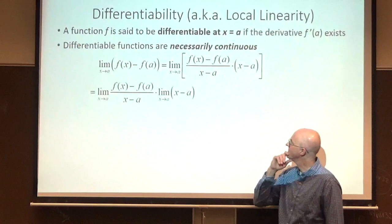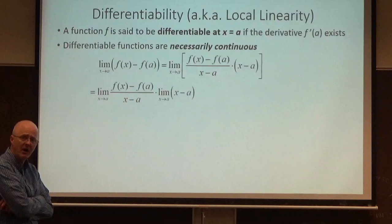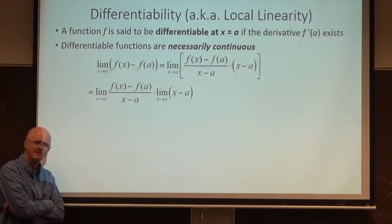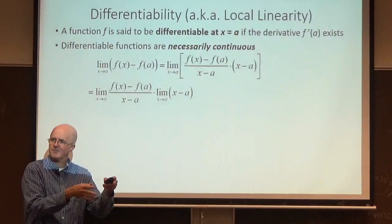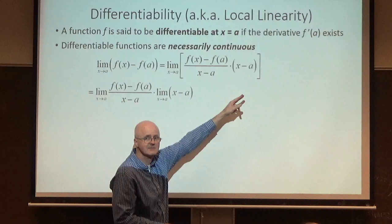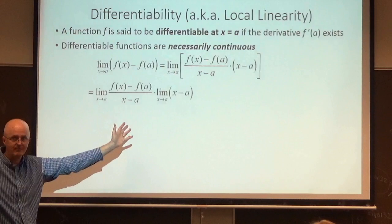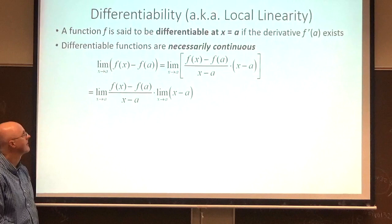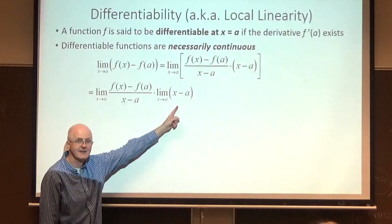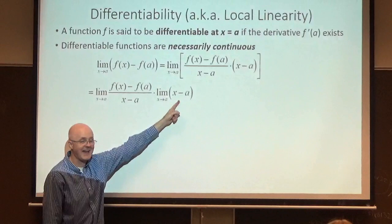With the limit definition, with epsilons and deltas, it doesn't matter what happens when x is a. Does that make sense? We're just modifying the function by multiplying by x minus a over x minus a, which doesn't change the value as long as x is not equal to a. The limit of a product is the product of limits. That's a property of limits. This limit equals zero, in fact. As x approaches a, x minus a is going to approach zero.